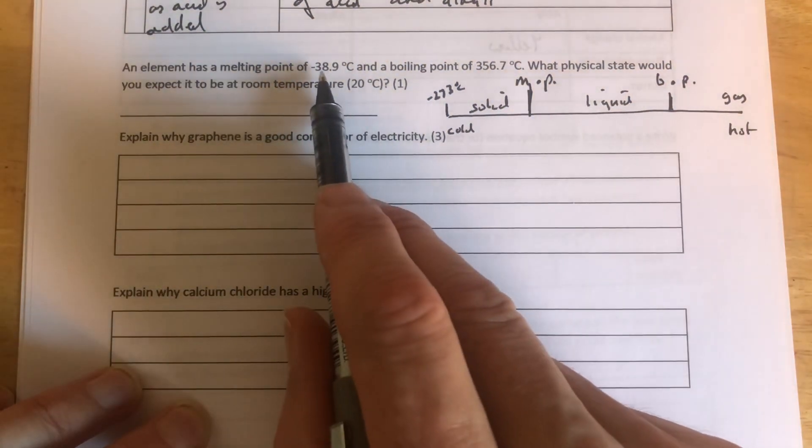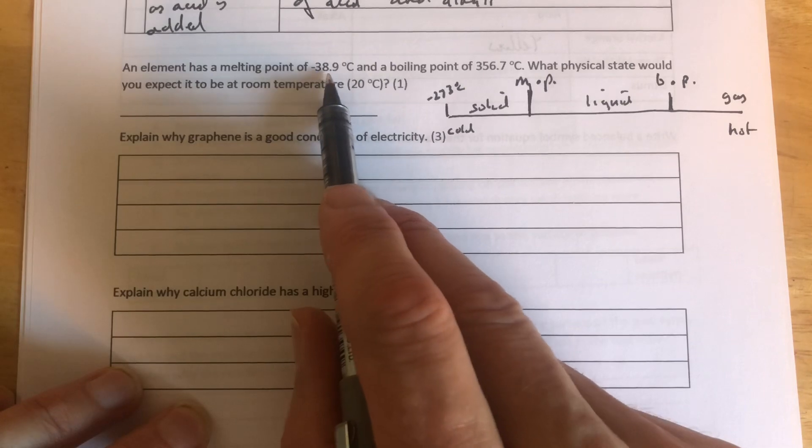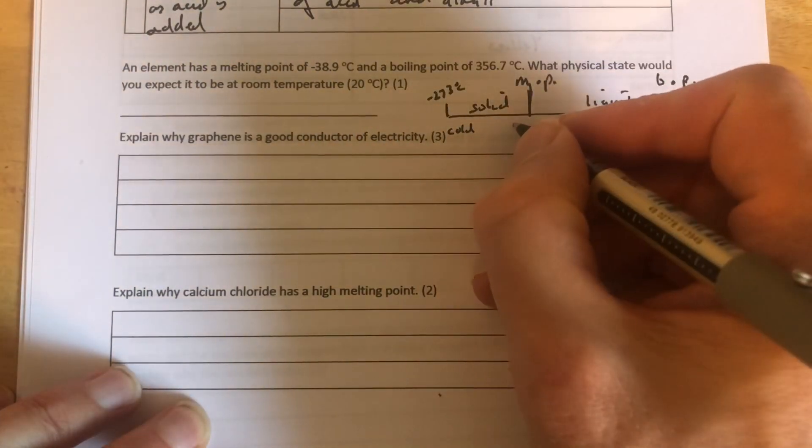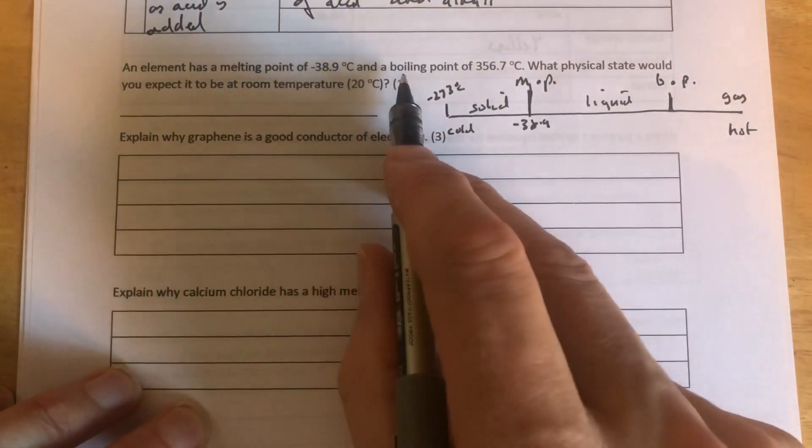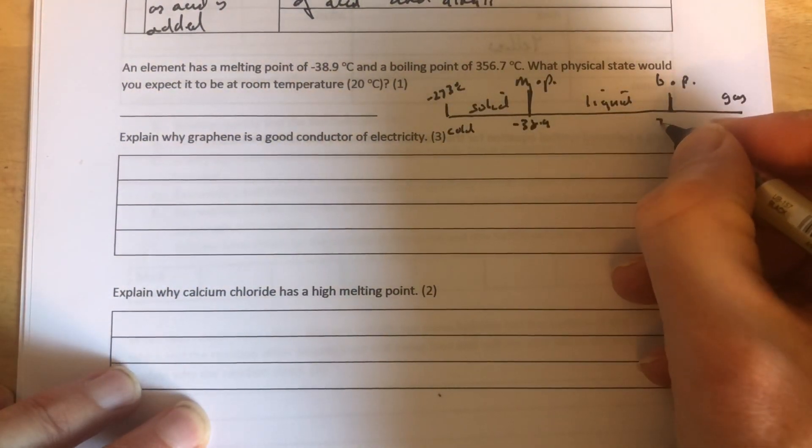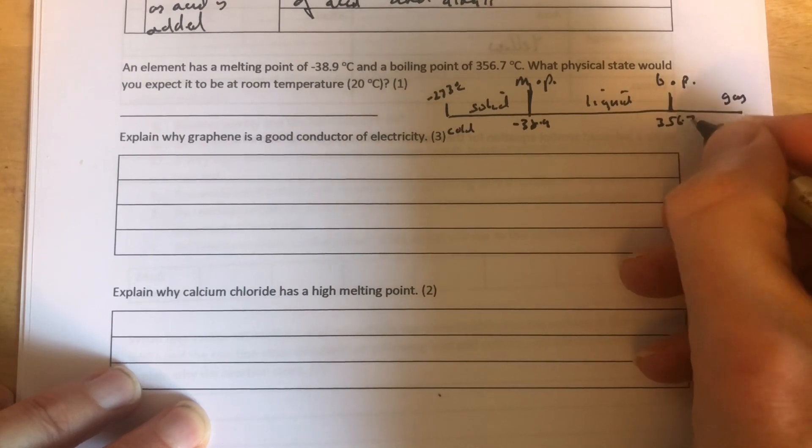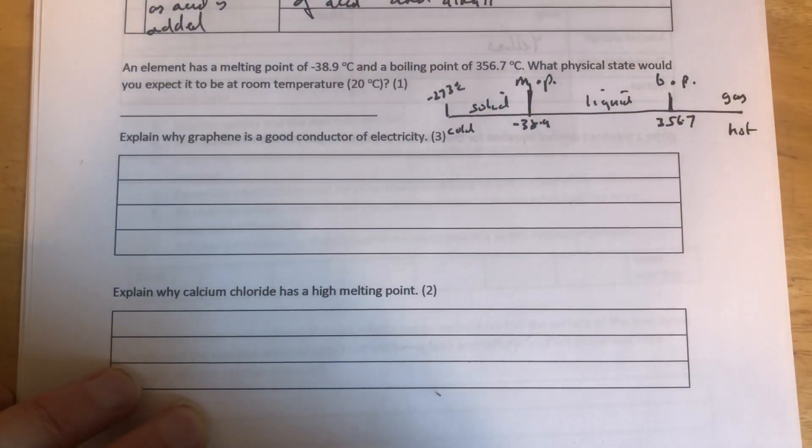We're given the melting point of this thing, minus 38.9. So this is a number line, so that's right, minus 38.9 next to the melting point. And we're told the boiling point, 356.7. So that's right, 356.7 on the boiling point.